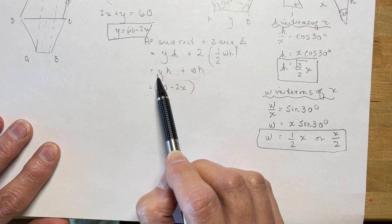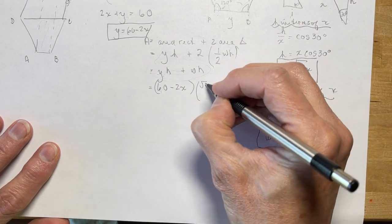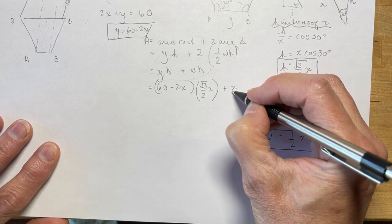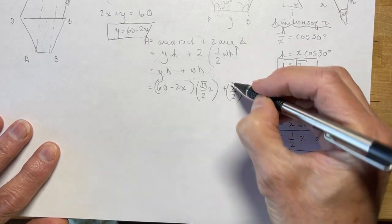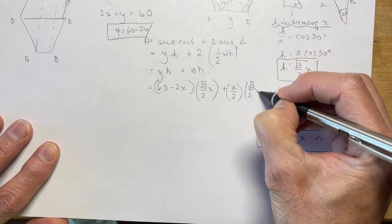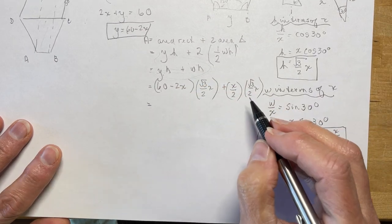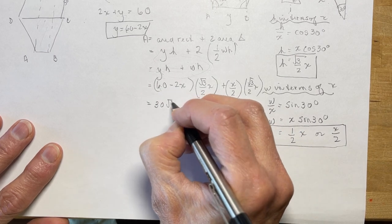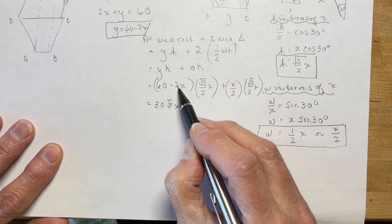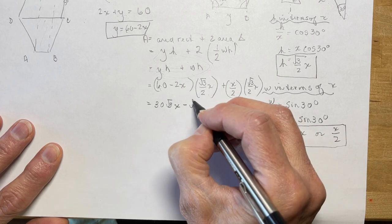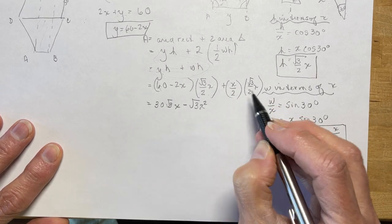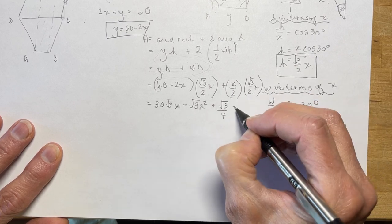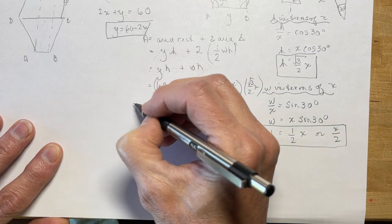So now I've got all the pieces to the puzzle that I need. So 60 minus 2x was y, h is root 3 over 2x, plus w which is going to be x over 2, and h again is root 3 over 2x. So that's my A, my area. I've written it all in terms of x.